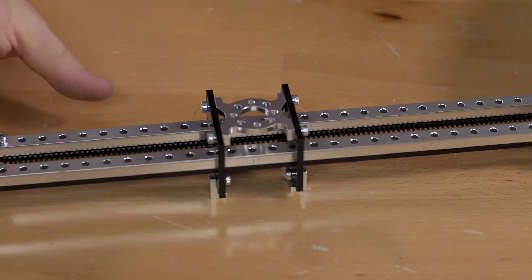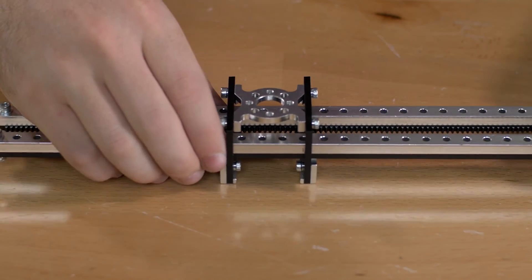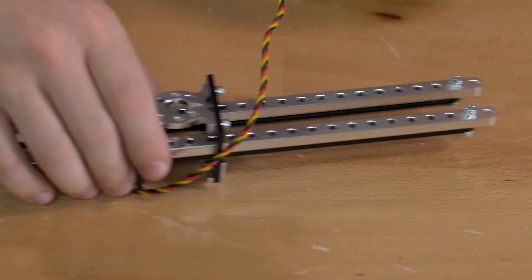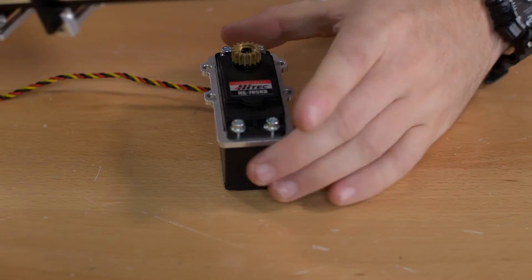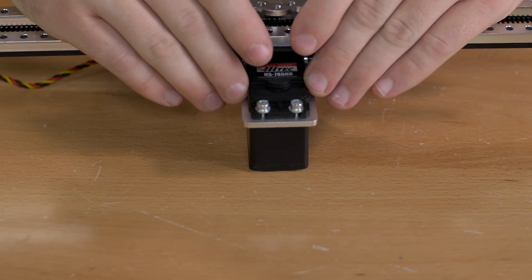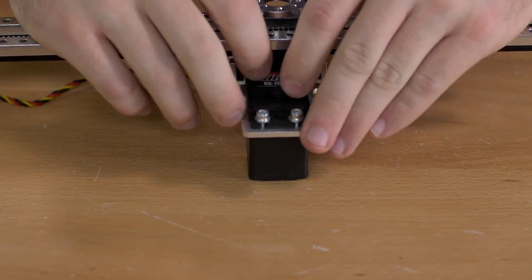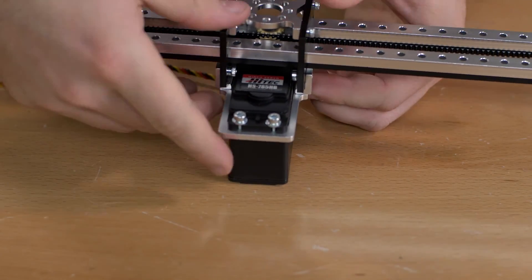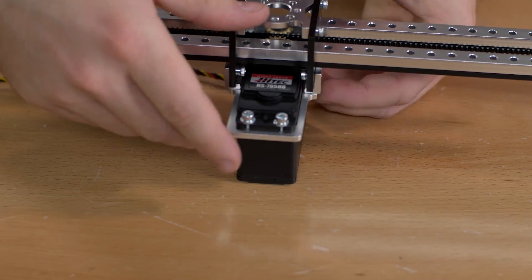The final step: you're going to want to center the two beams. Then that will just slide right over your servo. You're going to use quarter inch socket head screws to fasten that in place.